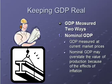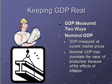Today we're going to continue on with GDP and look at the differences between nominal and real GDP. There are two separate ways to measure GDP. The first one is nominal GDP, which is GDP measured at current market prices. There's somewhat of a problem with this because it tends to overstate the value of production due to the effects of inflation, making it difficult to compare GDP in 2011 to GDP in the year 2000, since prices are different.